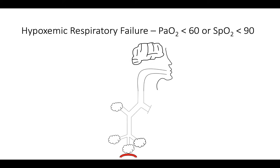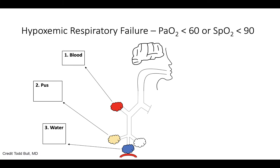An easy way to construct a differential for acute hypoxemic respiratory failure is to go through the various things that can fill an alveolus. The three most common causes are blood, pus, and water. Blood can be the result of diffuse alveolar hemorrhage due to vasculitis, bland hemorrhage from anticoagulation, infection, or a drug. Pus can be the result of pneumonia — bacterial, viral, or fungal — or ARDS. Water represents cardiogenic pulmonary edema or another manifestation of ARDS.